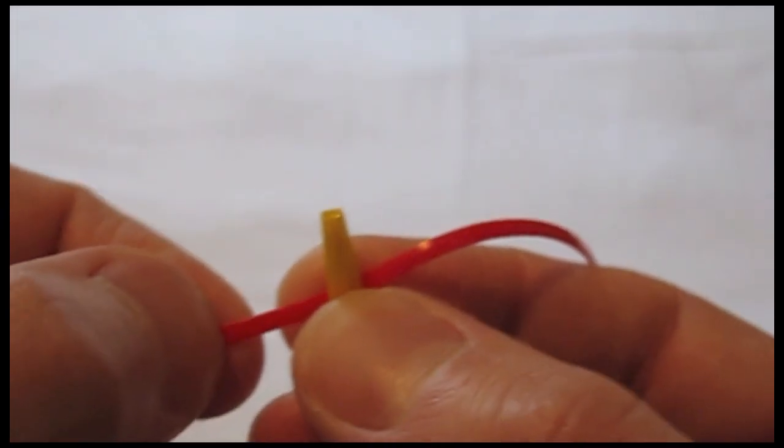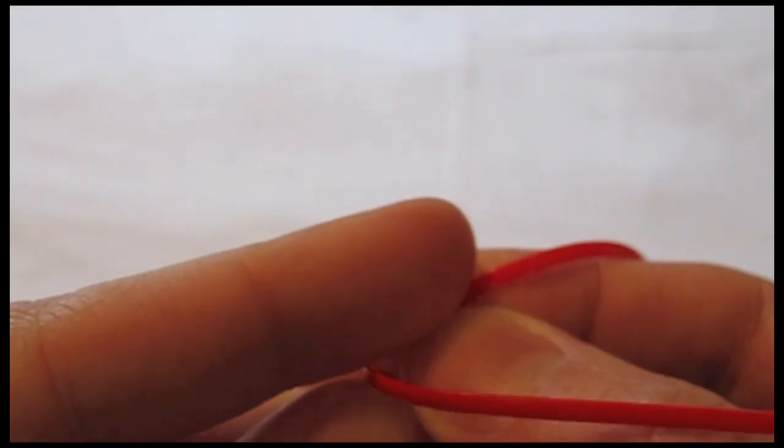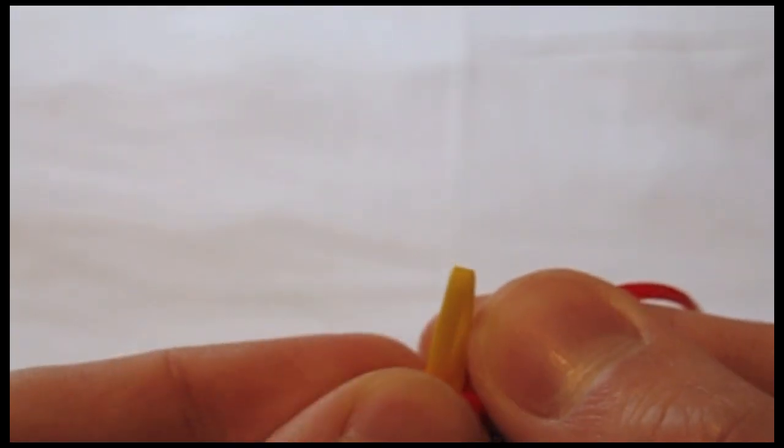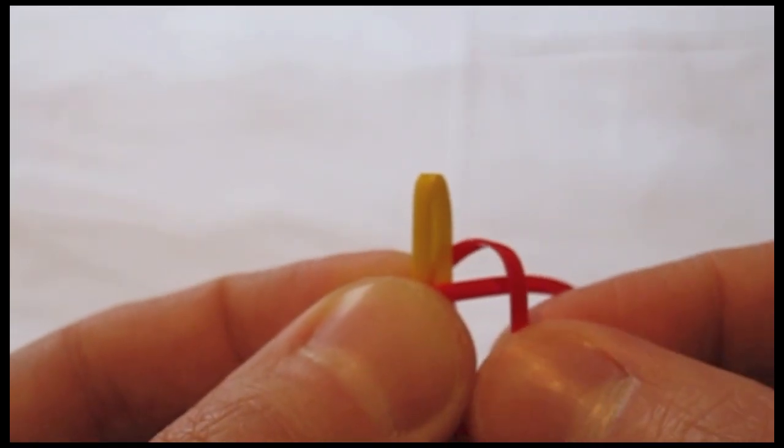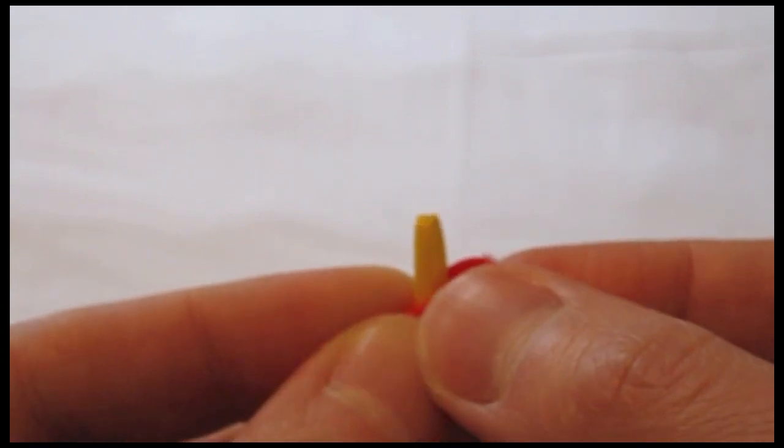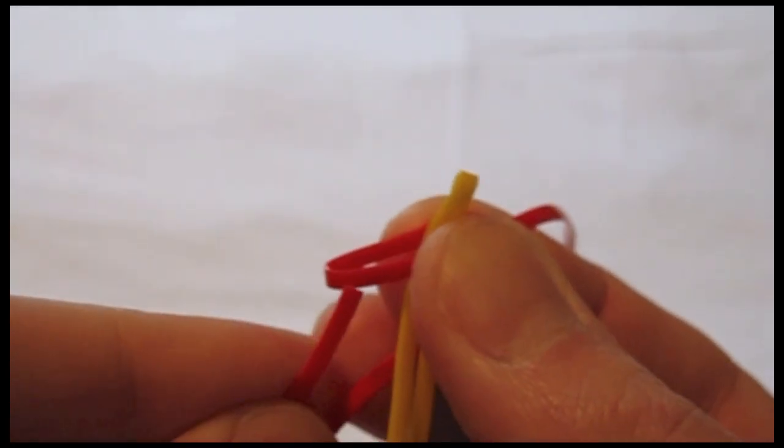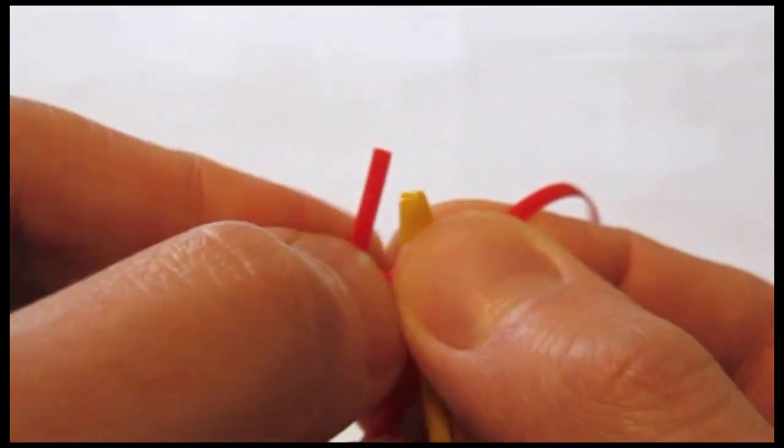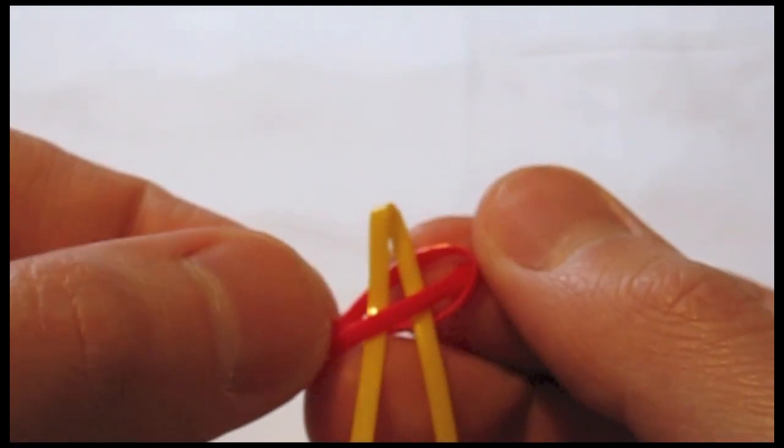This divides the long piece of GIMP into a left strand and a right strand. Take the strand on the left and bring it over to the right. Take the strand on the right, bring it in front of the left strand, then behind the short piece of GIMP, and finally up through the loop. Tighten the strands.